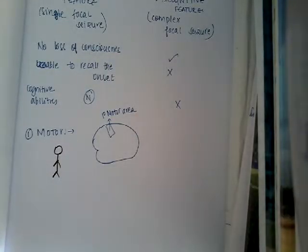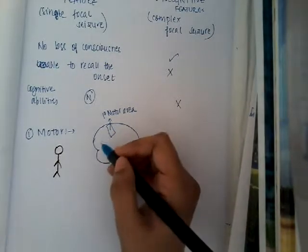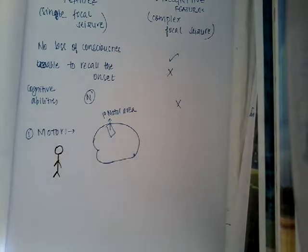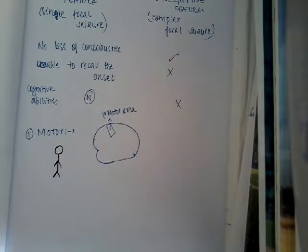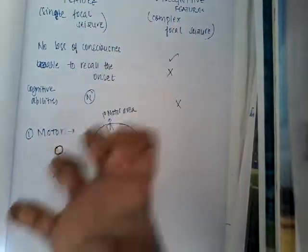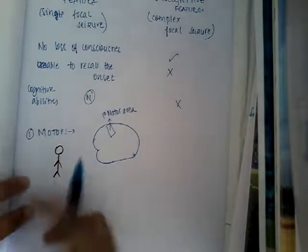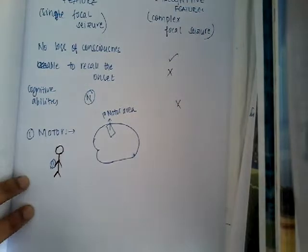If the seizure activity starts in the hand area of the primary motor cortex, there will be involuntary clonic movements of the hand. Clonic means repetitive flexion and extension — flexion, extension, flexion, extension — the repetitive extension and flexion movements of the hand occur.